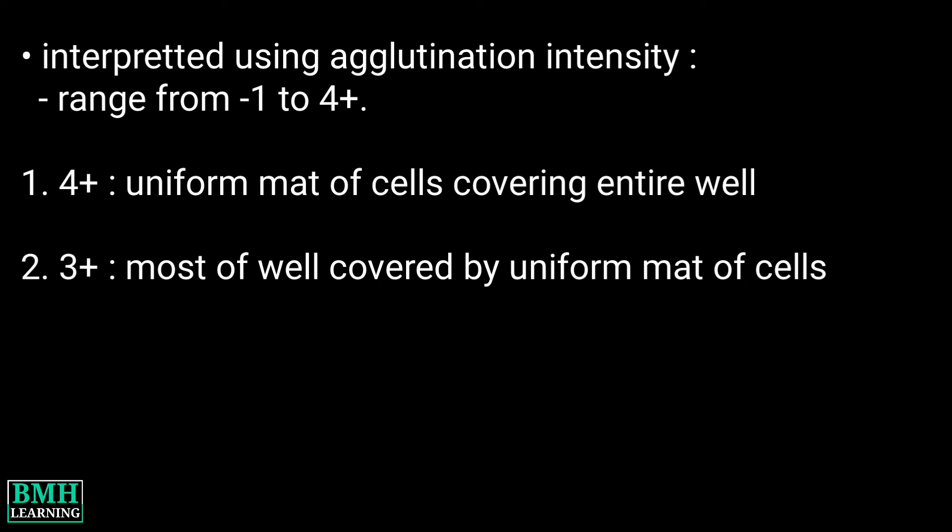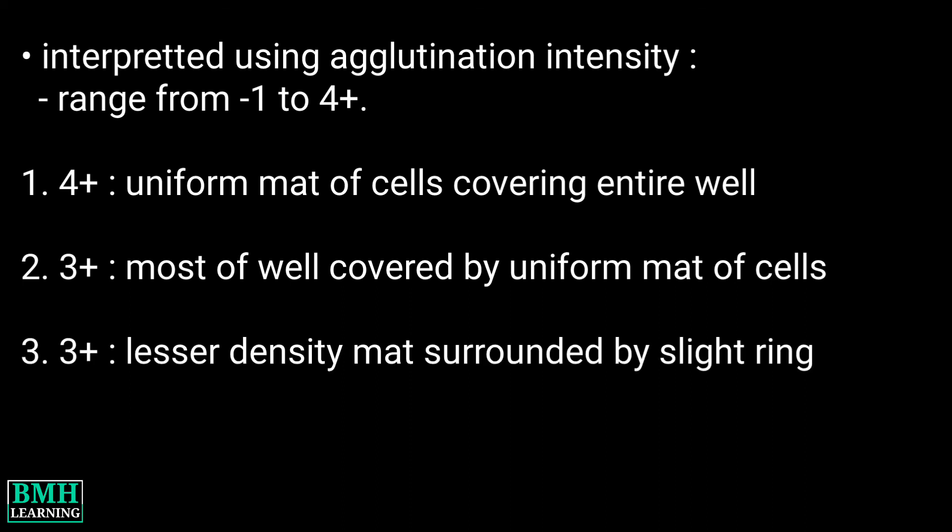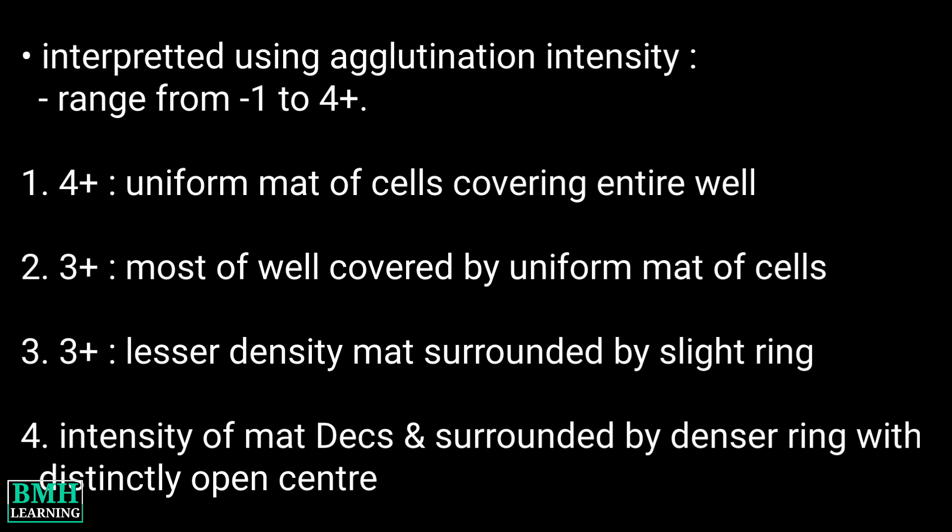It is 3 positive if most of the well is covered by a uniform mat of cells. It is 2 positive if a lesser density mat is surrounded by a slight ring. Finally, 1 positive is when the intensity of the mat decreases and is surrounded by a denser ring with a distinctly open center.